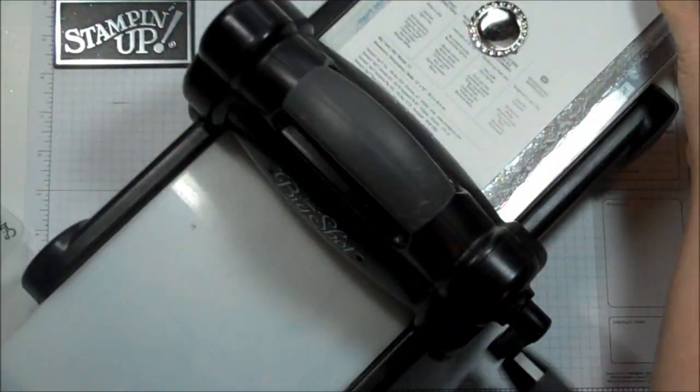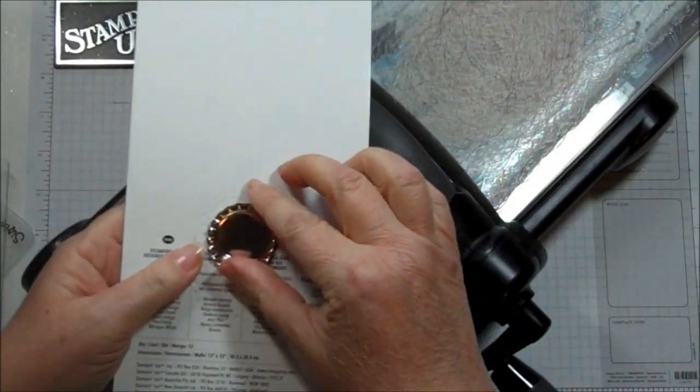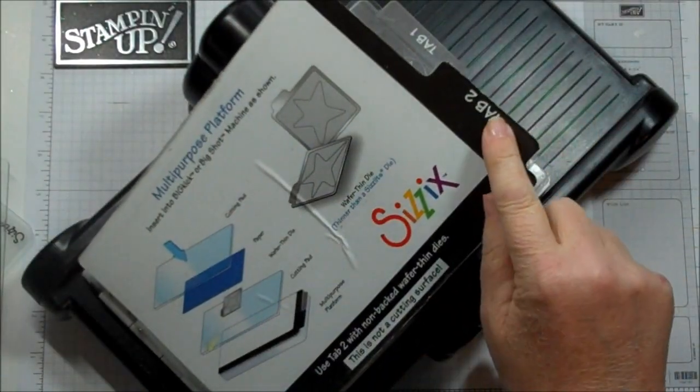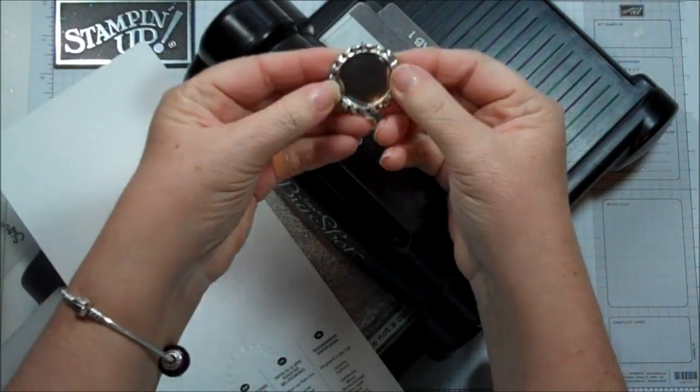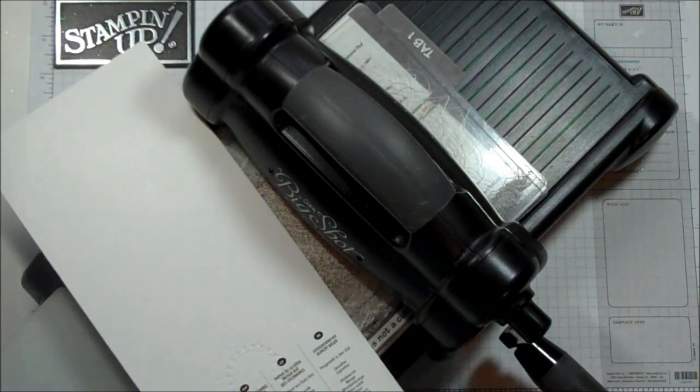And every Big Shot's different, so you might want to add either another piece of cardboard, or even add the extra Tab 2 maybe. Just kind of play around with it, but this is what it looks like. It just flattens it out. So let's go ahead and move the Big Shot.